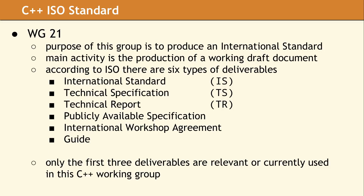The primary focus of Working Group 21 is to produce an international standard that describes and defines the C++ language. Most of the work this group does involves the task of developing a working draft document, which can be proposed as a new international standard. ISO has six different types of deliverables, which any working group could potentially produce. Only the first three — the IS, TS, and TR — are relevant to WG21.